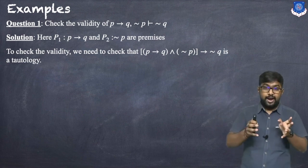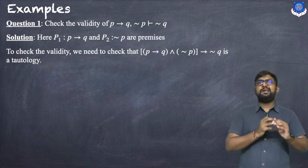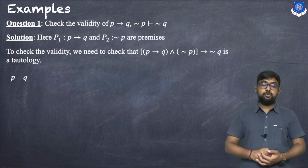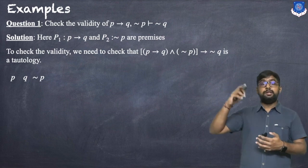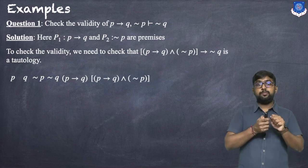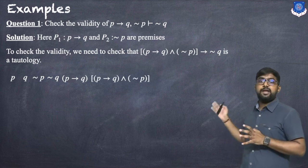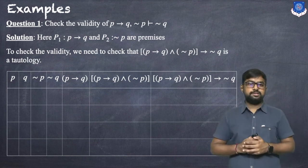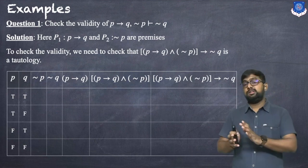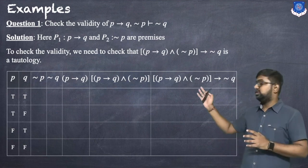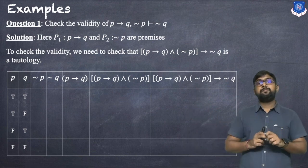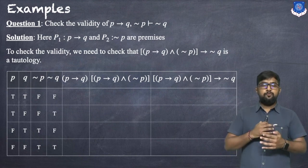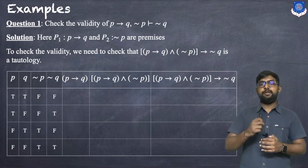We construct the truth table with columns: p, q, ¬p, ¬q, (p → q), (p → q) ∧ ¬p, and the final implication. With two variables there are four rows: TT, TF, FT, FF. Not p gives: F, F, T, T. Not q gives: F, T, F, T. P implies q gives: T, F, T, T.